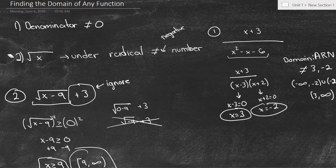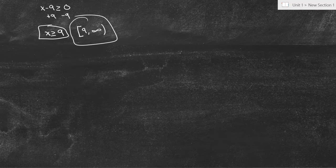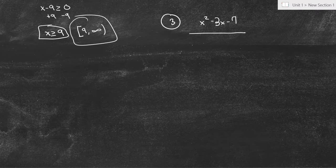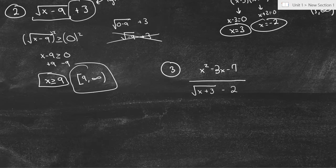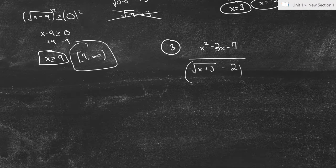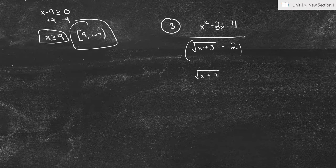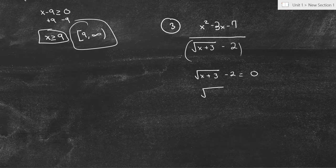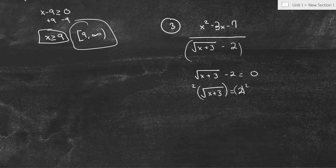Now let's look at a tougher example that combines everything. Example 3: x squared minus 3x minus 7, over the square root of x plus 3, minus 2. First, the denominator cannot equal zero, so any number that makes it equal zero won't be in our domain. So I'll set the square root of x plus 3, minus 2 equal to zero: adding 2 gives square root of x plus 3 equals 2; squaring both sides gives x plus 3 equals 4, so x equals 1.